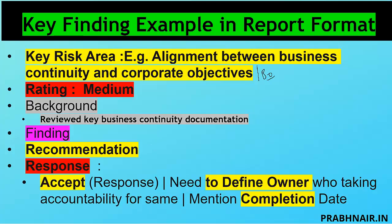The auditee provides responses. We document the owner responsible for taking action to mitigate the risk, define the completion date, and on that date do a follow-up asking for evidence to check whether it is closed. For example, if the corporate objective identified three or four business-critical applications that were not added in the BIA, we tell them to revalidate and add them. The BCP team accepts the concern, defines who is responsible for closing that finding, sets the completion date, and on that date I as auditor do the follow-up and ask for evidence.